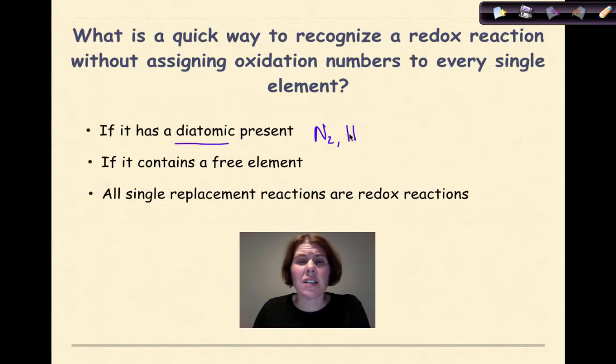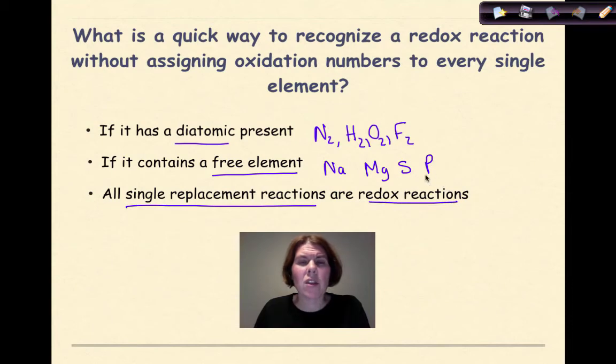Diatomic nitrogen, diatomic hydrogen, oxygen, fluorine. Any of these will basically indicate that you're dealing with a redox reaction. If it contains a free element, a metal or a non-metal by itself, sodium, magnesium, sulfur, phosphorus, we classify all of these as free elements.